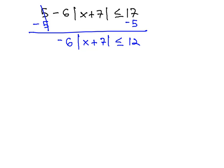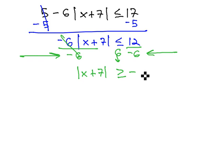Finally, to get the absolute value alone, we divide both sides by negative 6. This gives us the absolute value of x plus 7 is greater than or equal to negative 2, because we flip the inequality when dividing by a negative.